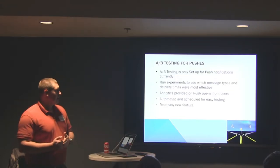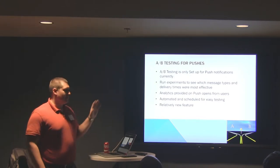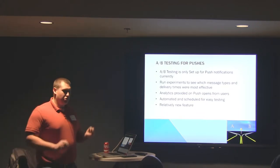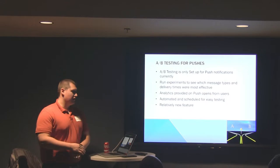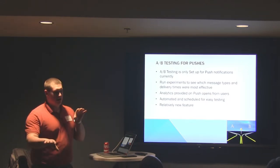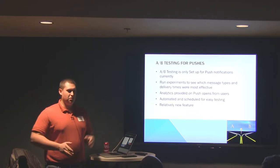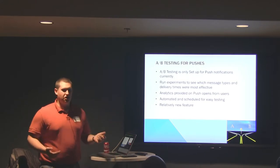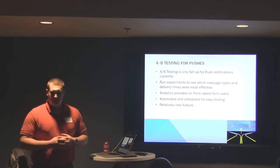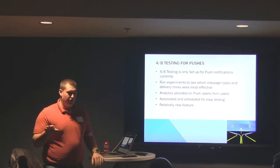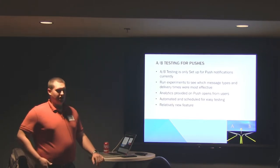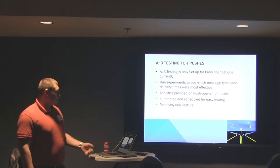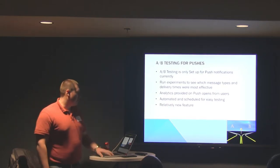A-B testing is something I haven't used personally yet. Right now they have A-B testing only set up for push notifications — they call them 'push experiments.' You can split your user base 50-50 and send a completely different push at a different time to those different user groups. It will keep track of all the analytics and responses, including whether they opened it and when. So you can see which push notifications are most effective for your segment.